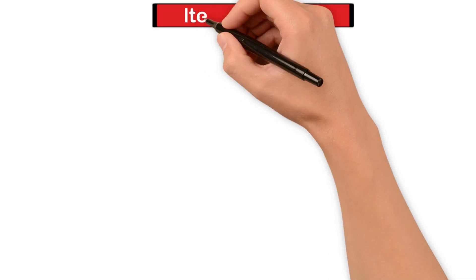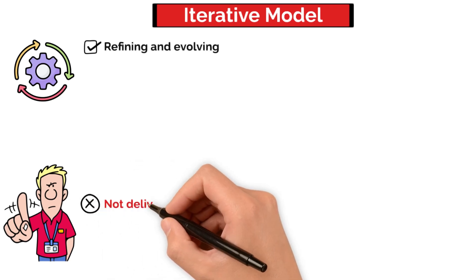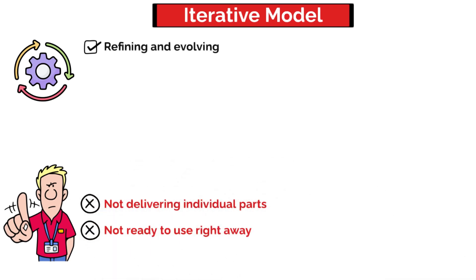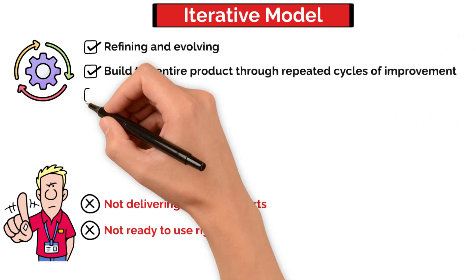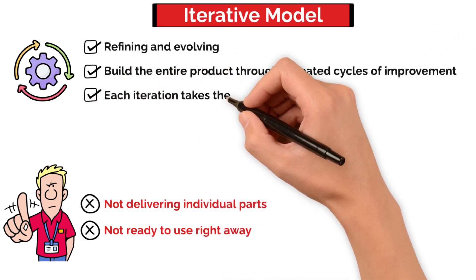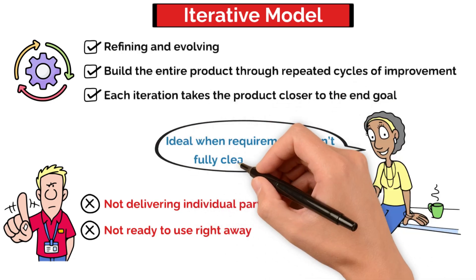Now let's talk about the iterative model, which is more about refining and evolving. Here, you're not delivering individual parts that are ready to use right away. Instead, you're building the entire product through repeated cycles of improvement. Each iteration takes the product closer to the end goal, and this approach is ideal when requirements aren't fully clear at the start.